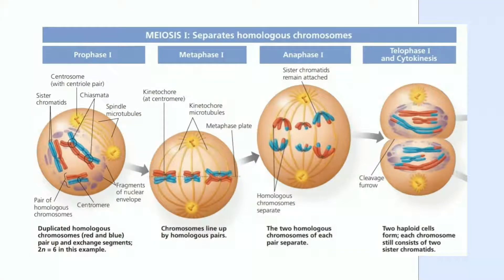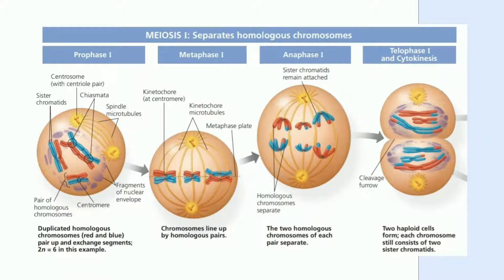Proses meiosis I didahului oleh proses interfase, yaitu ketika kromosom diduplikasi membentuk kromatid. Kromatid ini identik secara genetik dan bergabung dalam satu sentromer. Meiosis I melalui empat fase yaitu profase I, metafase I, anafase I, telofase I, dan sitokinesis. Profase I biasanya menempati lebih dari 90% dari waktu meiosis. Pada profase I, kromosom homolog berpasangan dan diselaraskan gennya. Kemudian terjadi crossing over di mana non-sister kromatid bertukar segmen DNA. Masing-masing pasangan kromosom membentuk tetrad yang terdiri dari empat kromatid. Setiap tetrad memiliki satu atau lebih kiasma, yaitu wilayah tempat terjadinya crossing over.